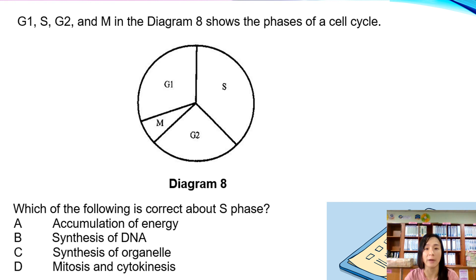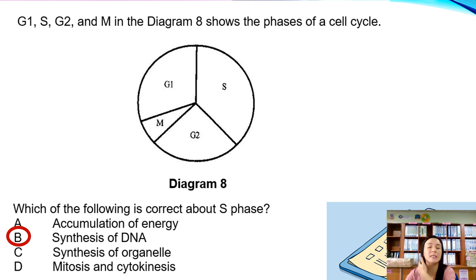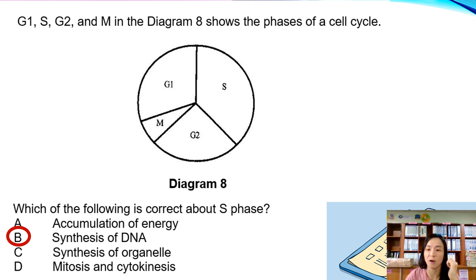The answer is B — synthesis of DNA. S phase stands for synthesis phase. During S phase, DNA replication or duplication occurs, and this is what we call synthesis of DNA.